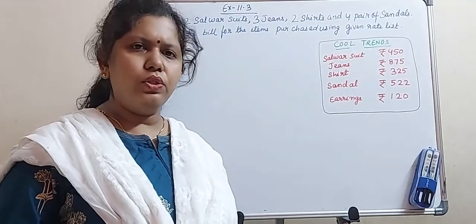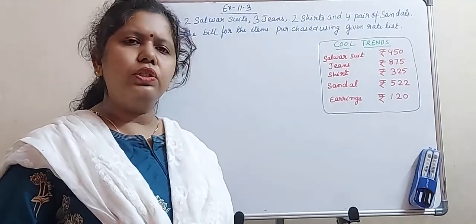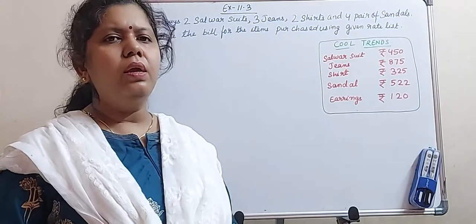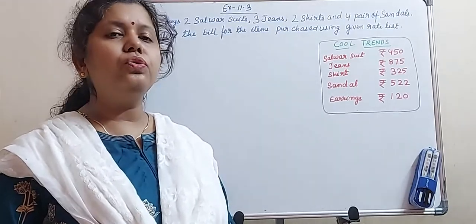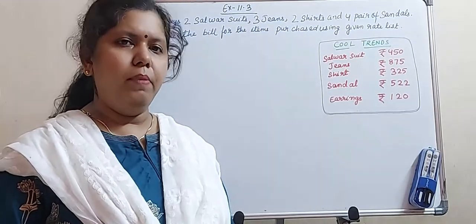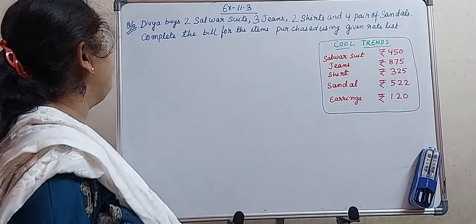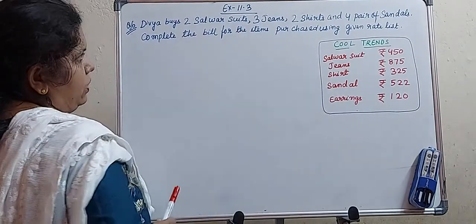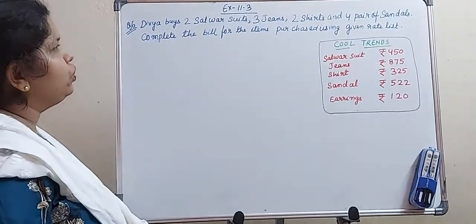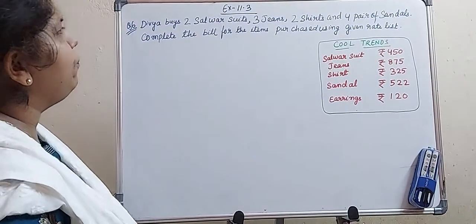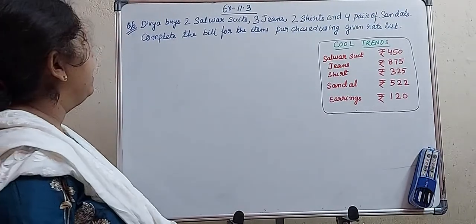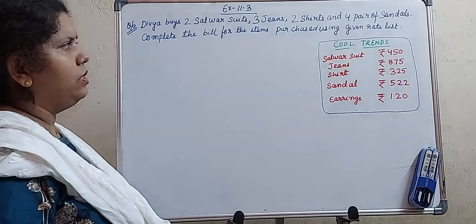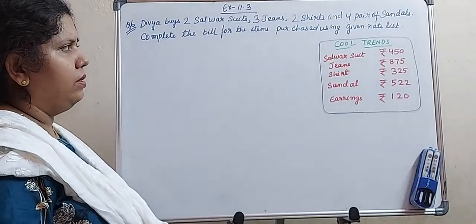This is the last question, question number 6 of exercise 11.3. Here we will learn how to prepare a bill. Tibia is buying 2 salwar suits, 3 jeans, 2 shirts and 4 pairs of sandals. We have to complete the bill for the items purchased using the given rate list.